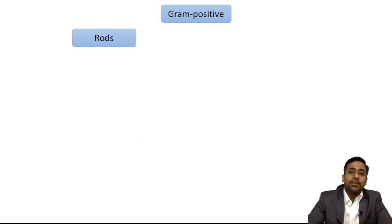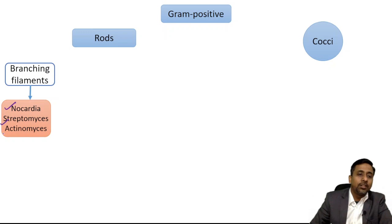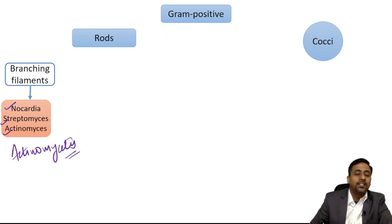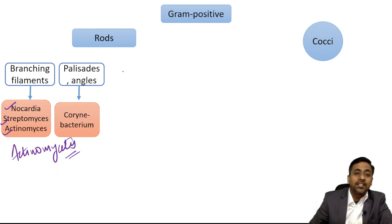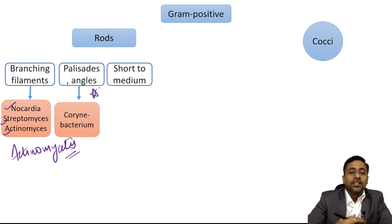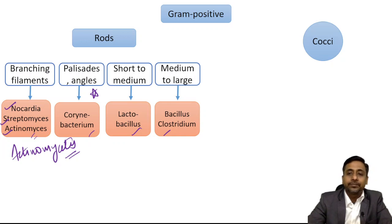Gram-positive organisms may be rod-shaped or cocci-shaped. If a gram-positive rod appears as a branching filament, it could be Nocardia, Streptomyces, or Actinomyces. Gram-positive rods arranged in palisades or at angles suggest Corynebacterium. Uniform arrangement, short to medium size suggests Lactobacillus. Medium to large suggests either Bacillus or Clostridium. These all vary on the basis of their size and arrangement.